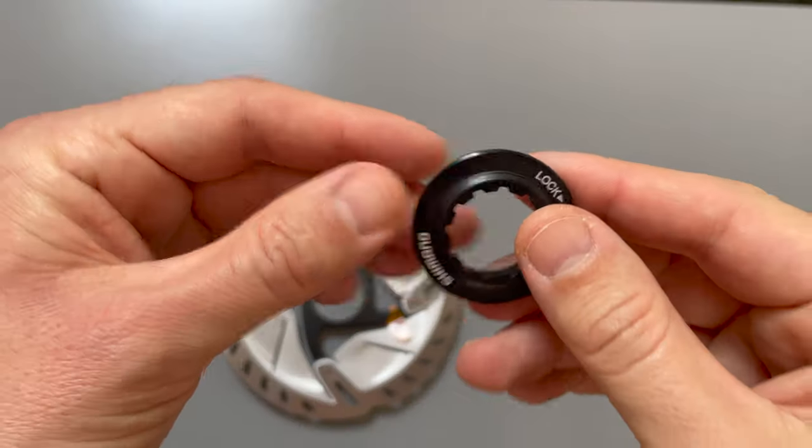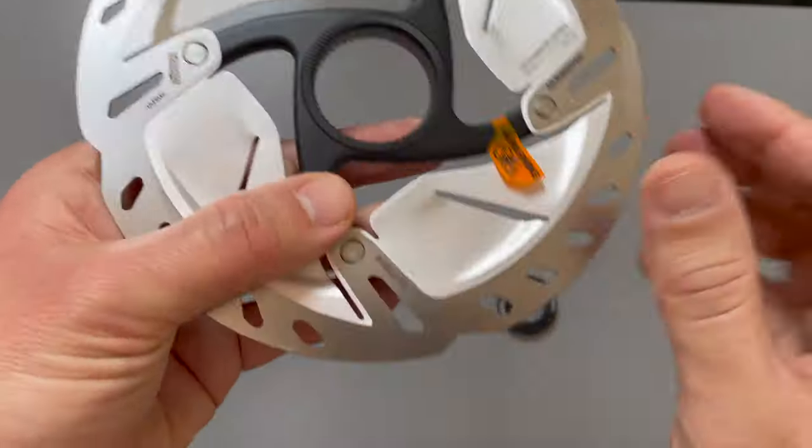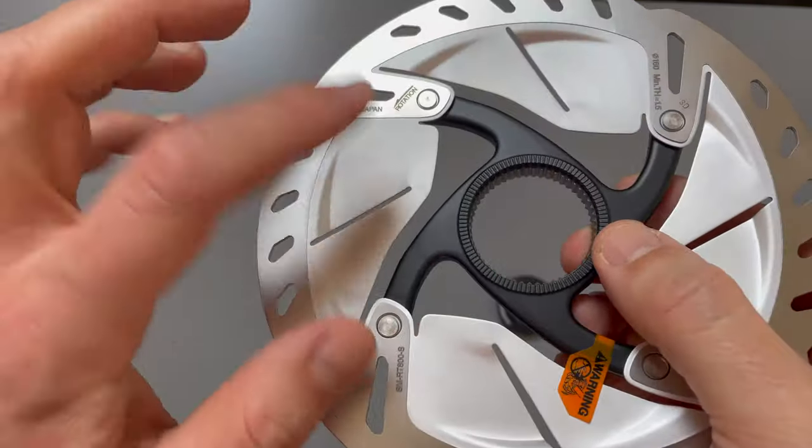Looking at the disc, the construction is a sandwich of aluminium and steel for the actual braking track. We have an aluminium centre lock rotor that's riveted into place.